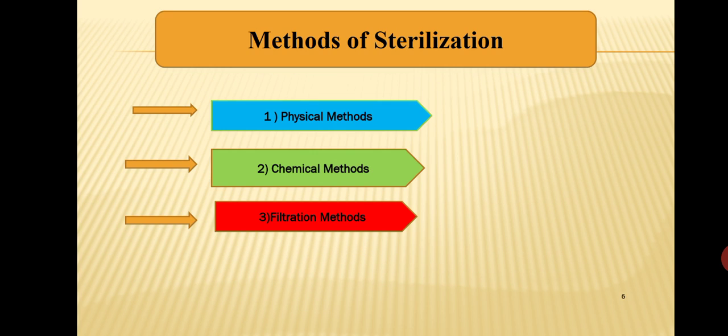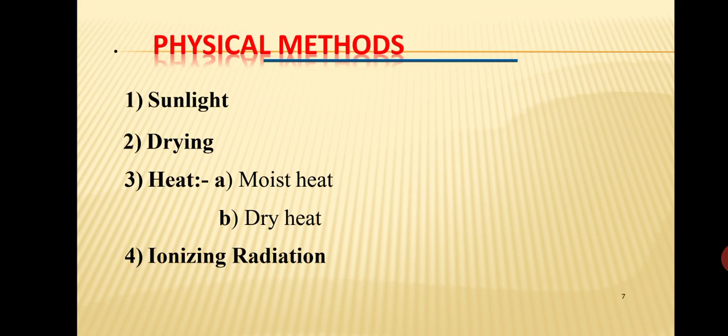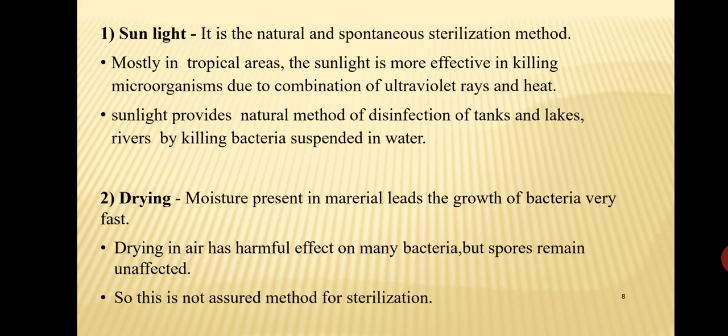There are three main methods of sterilization: first, physical methods; second, chemical methods; and third, filtration or mechanical methods. Physical methods include: sunlight, drying, heat sterilization (moist heat and dry heat), and ionizing radiation.